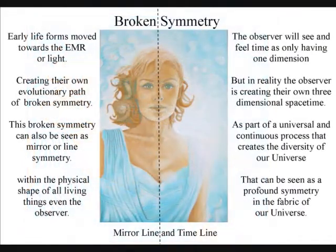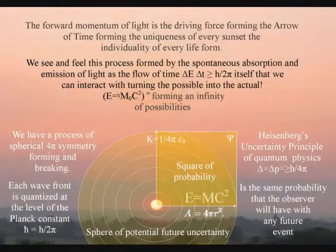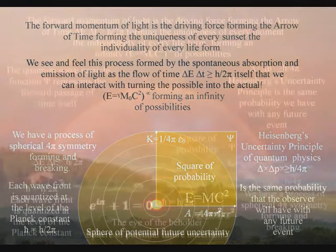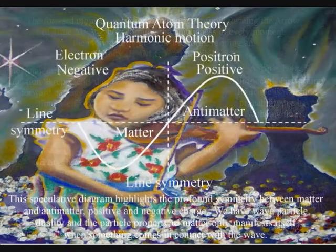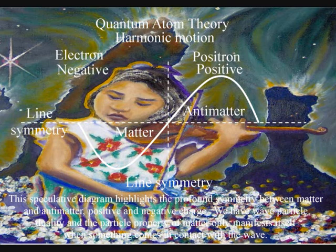The uniqueness of every life-form, of every sunset, of every moment, can only be created out of a potential infinity of possibilities. Because it is an infinity, everything is unique, and our whole universe is only relative to each individual object or observer.